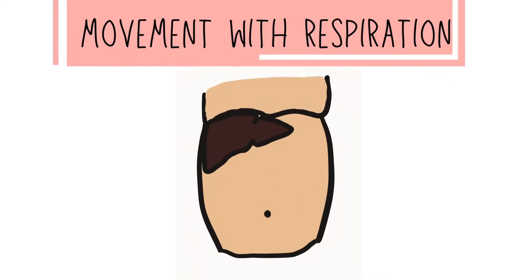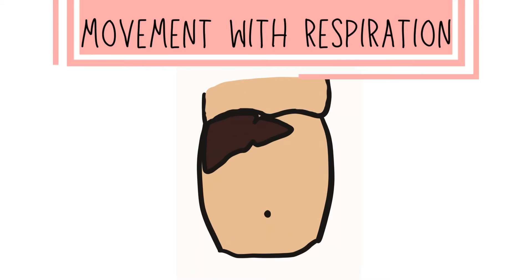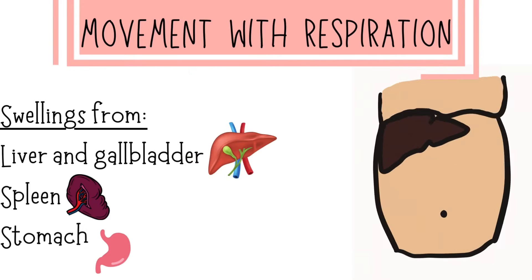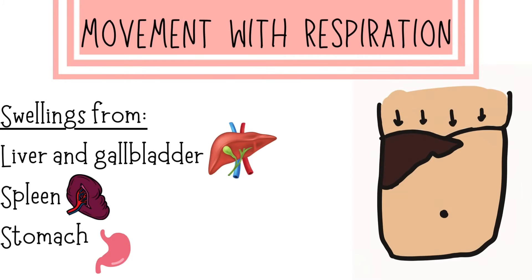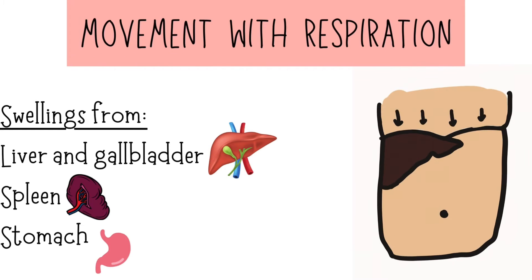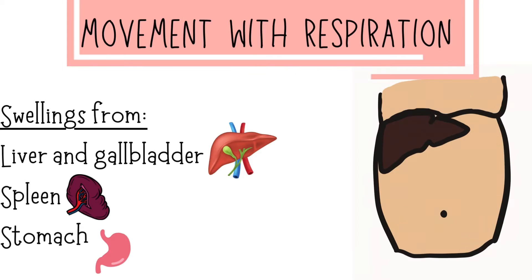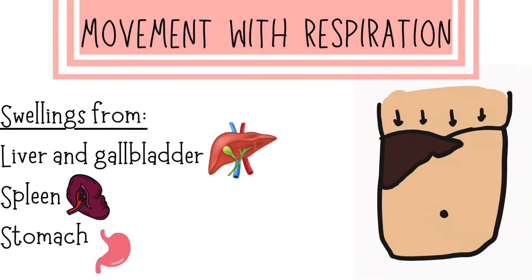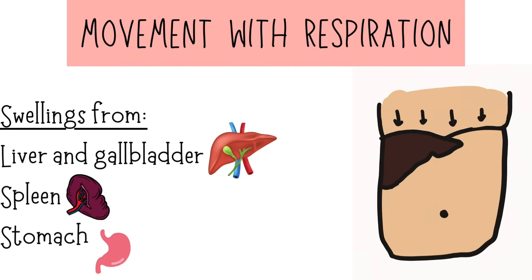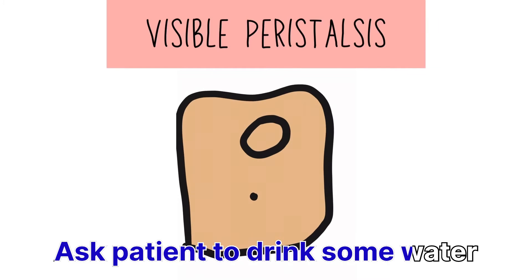Then we have to observe the movement of the swelling with respiration. We ask the patient to take deep breaths and observe if the swelling moves downwards. Swellings that originate from the liver, gallbladder, spleen, and stomach move downwards with respiration because they are present just below the diaphragm. During inspiration, the diaphragm moves downwards, pushing these structures downwards as well.